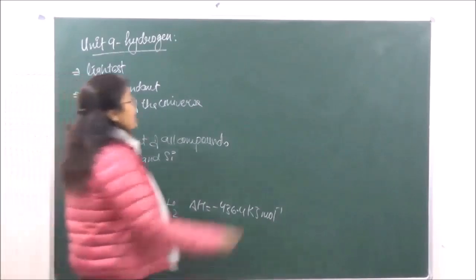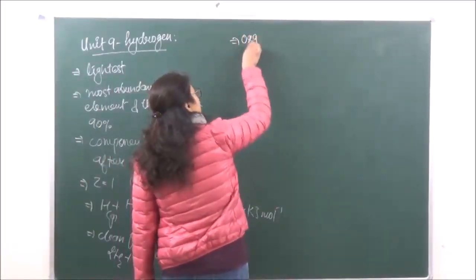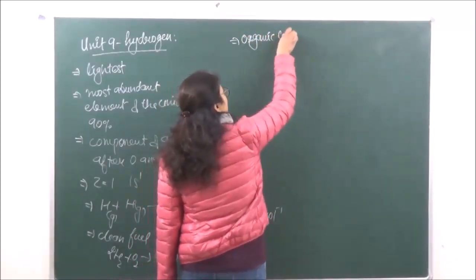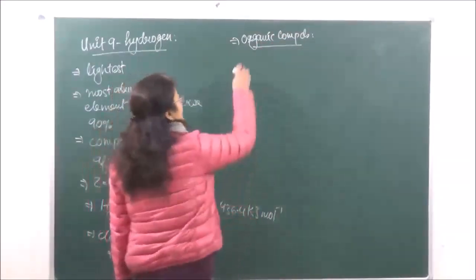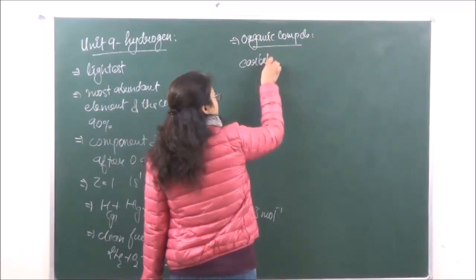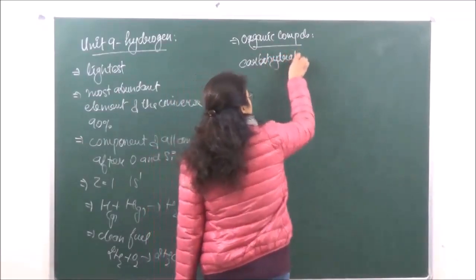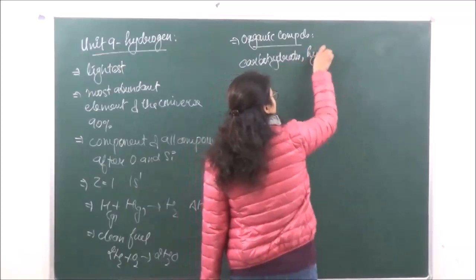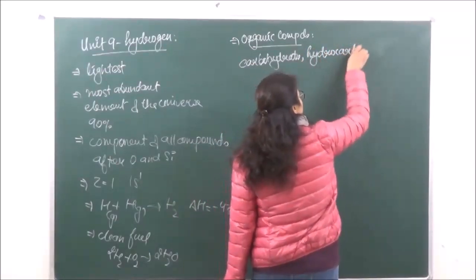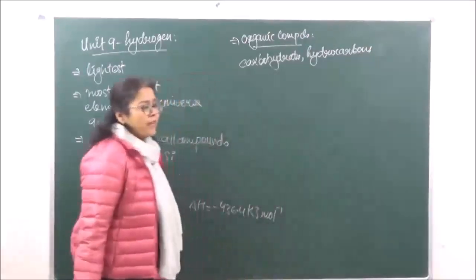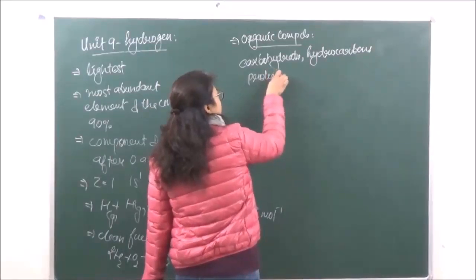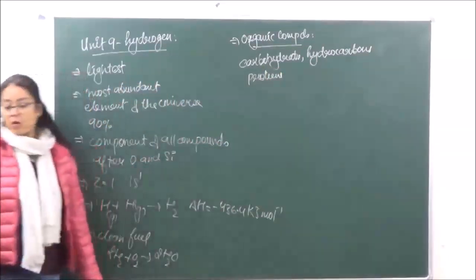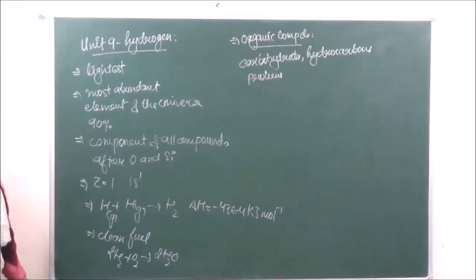There are many organic compounds in which Hydrogen is present as one of the components. For example, if we take carbohydrates, hydrocarbons, or proteins — most organic compounds have Hydrogen as one of their important components.